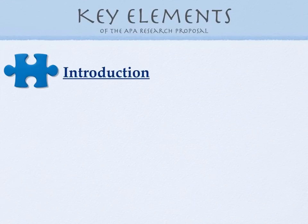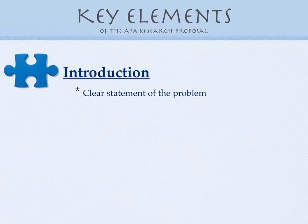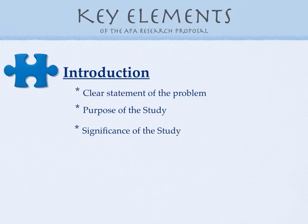Now that we know the lay of the land, let's look at some specifics. What information actually belongs in the introduction? Well first, you need a clear statement of the problem — what exactly are you going to study? This is a little broader focus than your hypothesis will be later in the paper. Then we need to know the purpose of your study: what are you hoping to discover and what do you think you'll do with that information? Then you'll need to explain the significance of your study — why is it important? Here you might include some statistics to help make your case, and it's absolutely okay to start citing sources this early in your proposal.